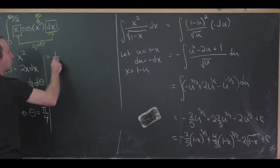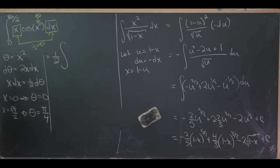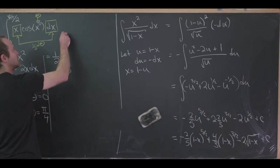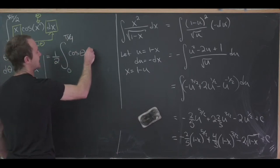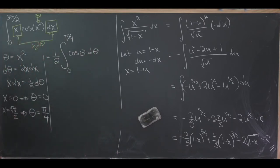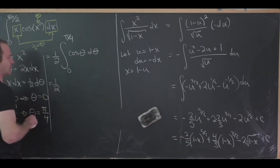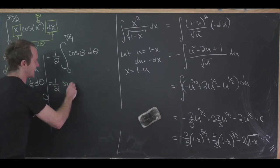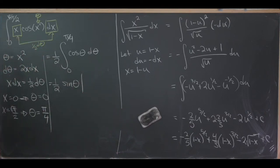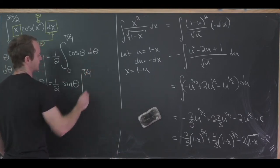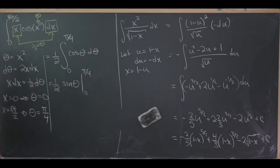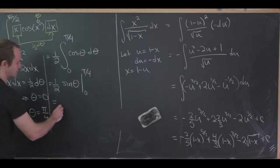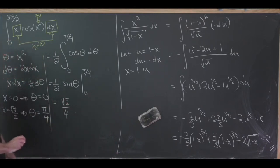So we're left with one-half times the integral from zero to pi over four of cosine of theta d theta. Taking the antiderivative, we have one-half sine of theta evaluated from zero to pi over four. Sine evaluated at zero is zero, whereas sine evaluated at pi over four is the square root of two over two. So we can write this as the square root of two over four in the end.